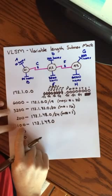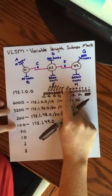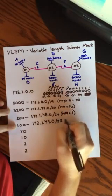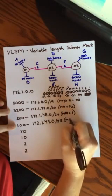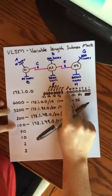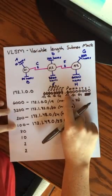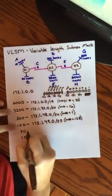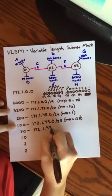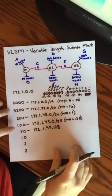Now I need a range of 100 hosts. So I'm going to look over here. Slash 25 gives me a range of 128. So that will be enough, slash 25. My magic number is 128. This is where it changes. Now I'm in my fourth octet. So I add my magic number in my fourth octet. So my next network is 172.1.49.128.